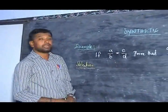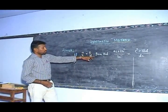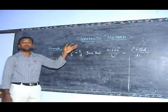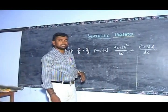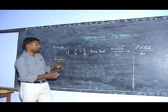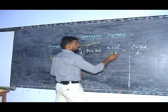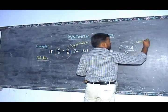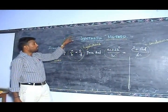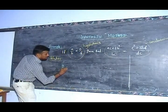Now I want to take another example of synthetic method. The problem is: if a/b is equal to c/d, prove that (ac + 3b squared) / bc is equal to (c squared + 3bd) / dc. We already know that the term synthetic is derived from the word synthesis, meaning combining and joining. In this problem, the hypothesis is a/b = c/d, and the conclusion is what we need to prove. In the synthetic method, we first take the hypothesis as a true statement and then prove the conclusion.